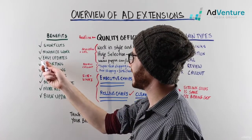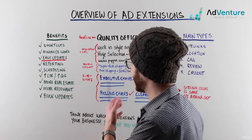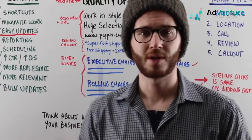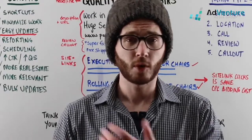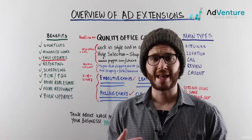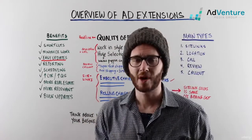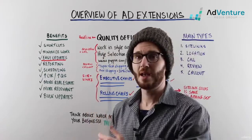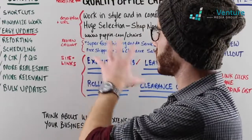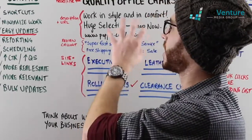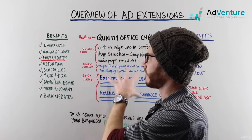Ad extensions are very easily updatable, so you have easy updates. If you have sitelink extensions, you can go into your AdWords dashboard and change the headlines, schedule them, and change the descriptions without actually changing the body — the headline, description, and URLs of your ad text. So if you're running an A/B test on your headline and you just want to swap out your sitelinks, you can do that without touching the click data, conversion data, impressions, or cost per conversion of the actual ad.